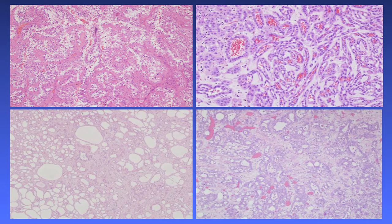I want to present photos of the rare variants, going from the upper left: translocation-associated, mucinous tubular spindle cell, tubulocystic, and renal medullary or collecting duct carcinoma. It is critical that pathologists understand the spectrum of these lesions and provide the appropriate diagnosis.